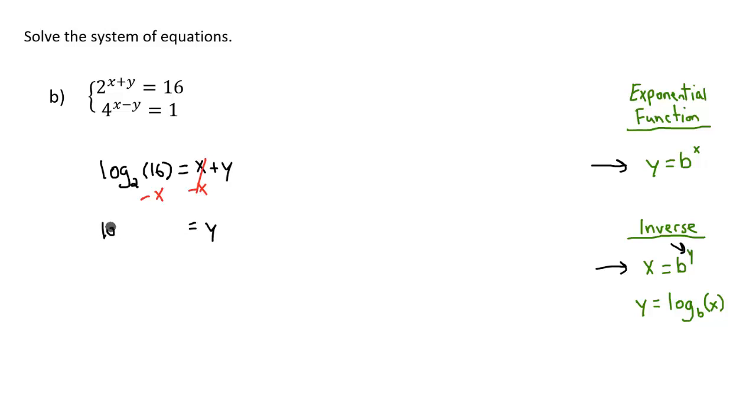We have y equals log base 2 of 16 minus x. And if you want to simplify this a little bit more, we know that log base 2 of 16 is going to be 4. And then we've got minus x. This is going to be equal to y. So here's our equation, and we could graph this.